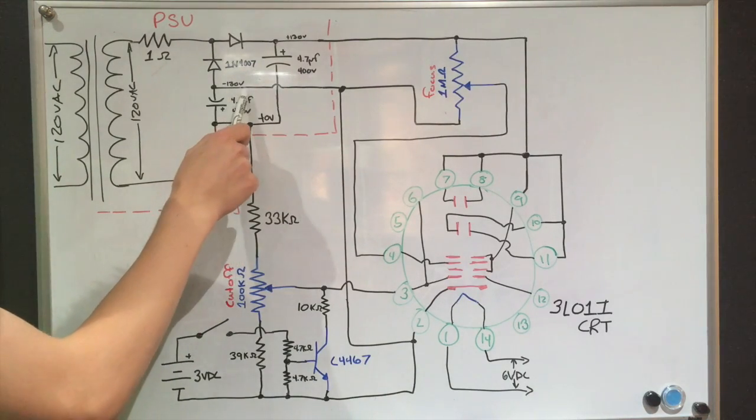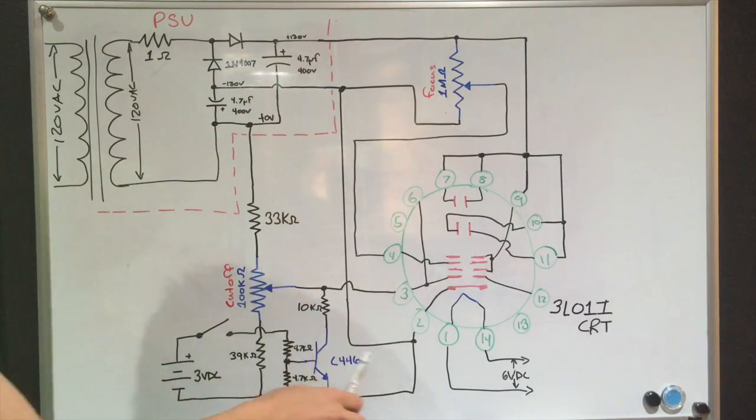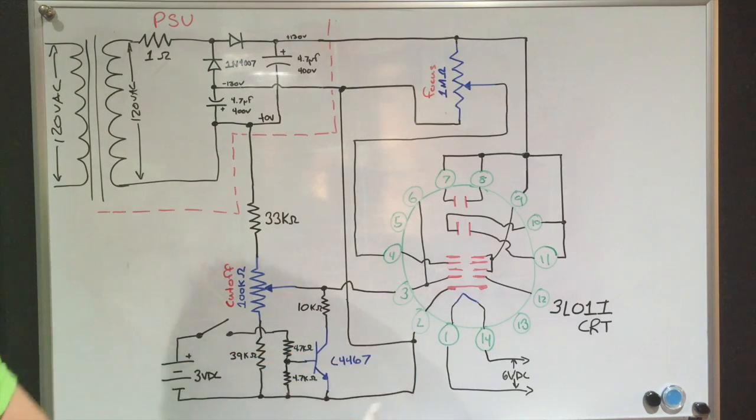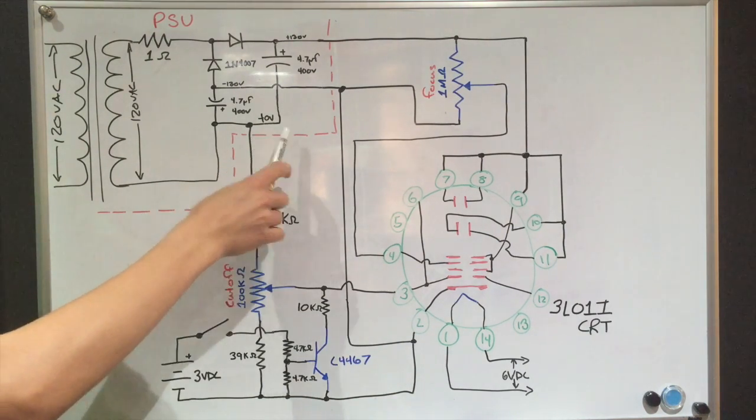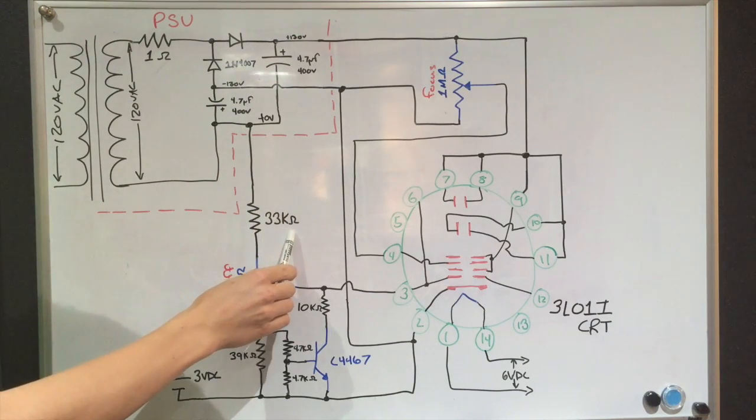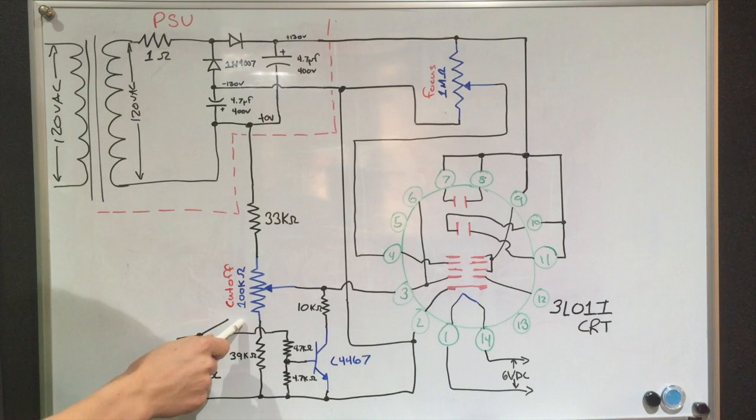If we come over to this negative 130 volt rail, you can follow it down to the cathode like it was in the previous schematic, but it also now comes to the emitter of this NPN transistor, the side of this 4.7 kilohm resistor which ties the base of the transistor to ground or to the negative rail. It connects this 39 kilohm resistor to the negative rail and the negative side of this 3 volt battery pack. Coming back up to the 0 volt rail, we can follow it down to this 33 kilohm resistor and this 100 kilohm potentiometer, which comes back into the 39 kilohm resistor.